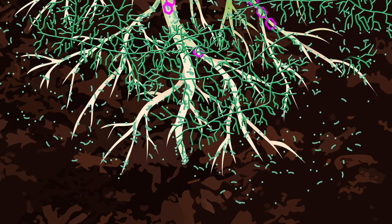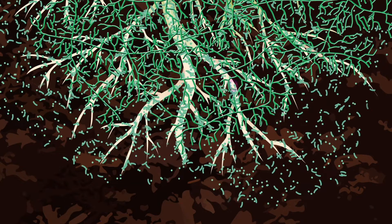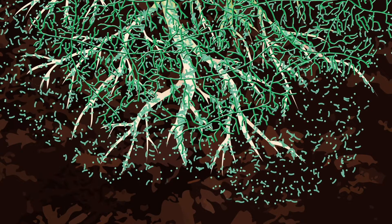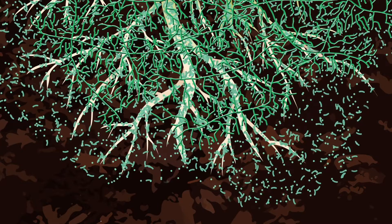Naturally, these beneficial organisms congregate around the roots. In fact, they totally cover the surfaces of the roots in order to get immediate access to this valuable food source.